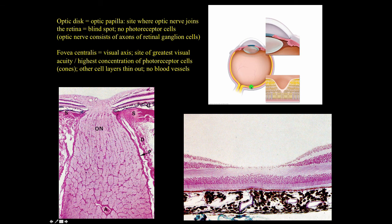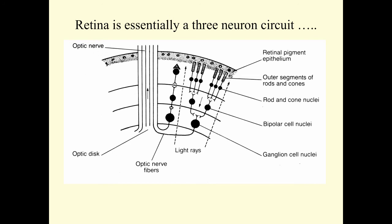The fovea centralis is the visual axis of the eye — the focal point and the point of greatest visual acuity. It has the highest concentration of photoreceptor cells, essentially just cones, and the other cell layers in the retina thin out there. There are also no blood vessels in the fovea centralis. In the most simple-minded sense, the retina can be viewed as a three-neuron circuit: photoreceptors (rods and cones), bipolar cells, and ganglion cells, with axons projecting through the optic nerve into the brain.